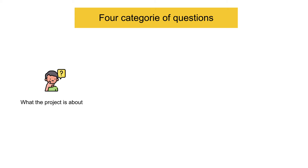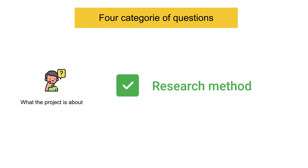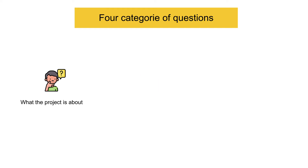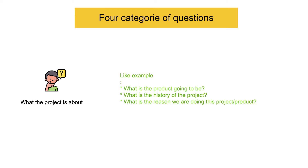Type one is what the project is about. The more you know about the project or product and what the organization hopes to achieve from it, the better you can ensure that the research is relevant. For example: What is the product going to be? What is the history of this project? What is the reason we are doing this project or product?